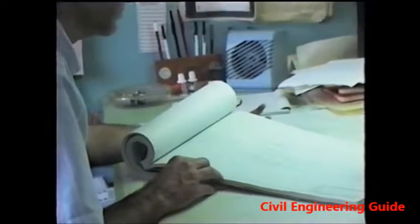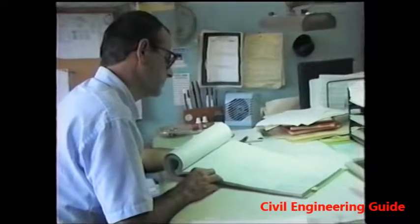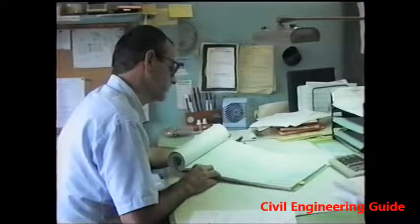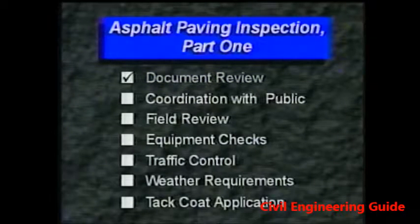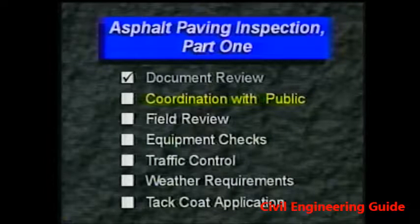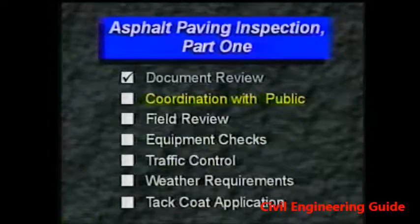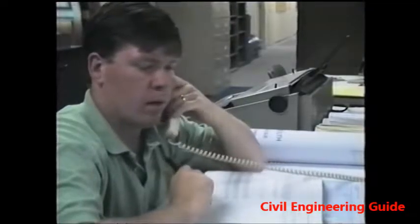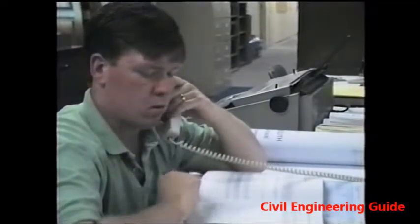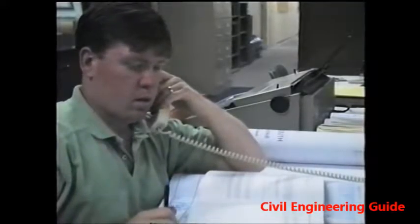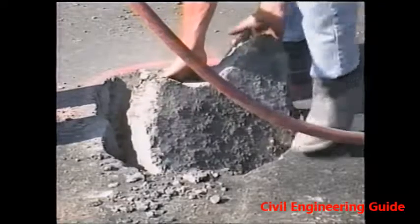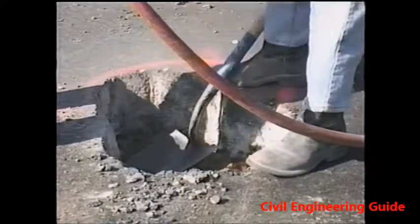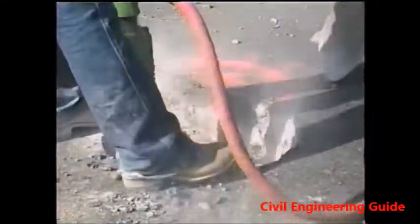Remember, no changes should be made to the traffic control plan unless the changes have been approved in writing by your agency. After reviewing all the project documents, find out what plans have been made to coordinate the paving operation with the utilities, businesses, and residents who will be affected. As necessary, utilities may have to be notified early so that arrangements can be made to adjust manhole elevations. Also, any planned crossroad utility cuts must, of course, be completed and patched before the new pavement is placed.